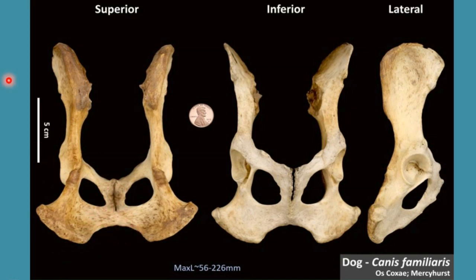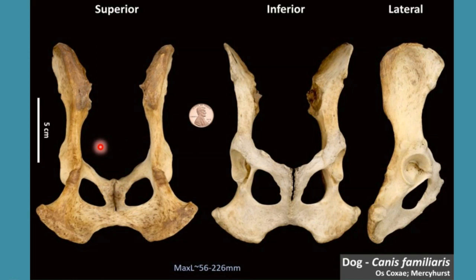The conjugate diameter is the length between the sacrum and the cranial end of the pubic symphysis. The transverse diameter is the widest horizontal distance of the pelvic cavity.